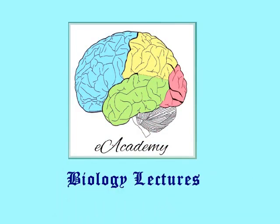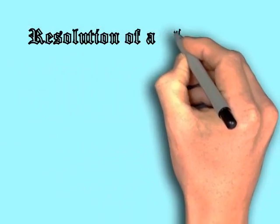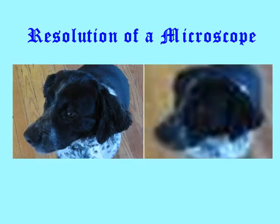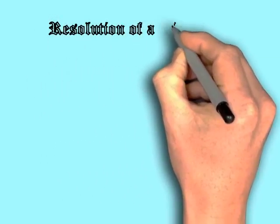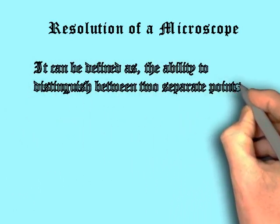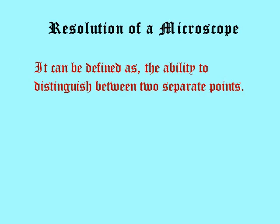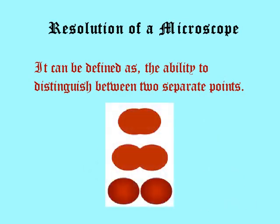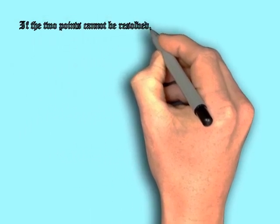Welcome to E-Academy Biology Lectures. In today's lecture, we will be talking about the resolution of a microscope. Resolution is defined as the ability to distinguish between two separate points. If the two points cannot be resolved, they will be seen as one point.